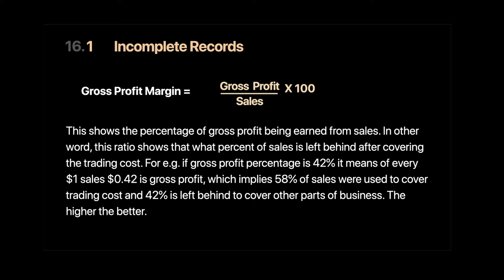We would need the gross profit margin to find missing figures — for example, cost of goods sold could be missing, purchases could be missing, or inventory could be missing. We will use this ratio when we solve other questions.